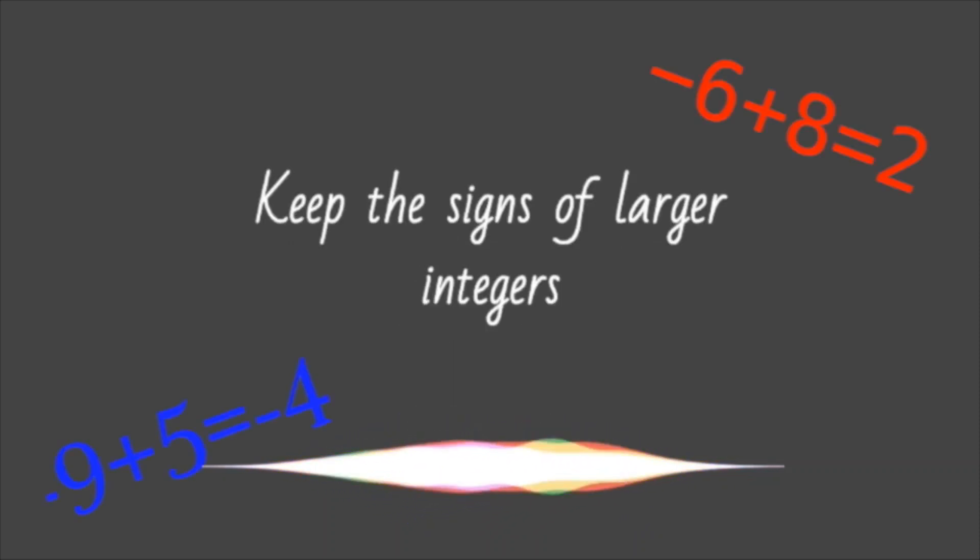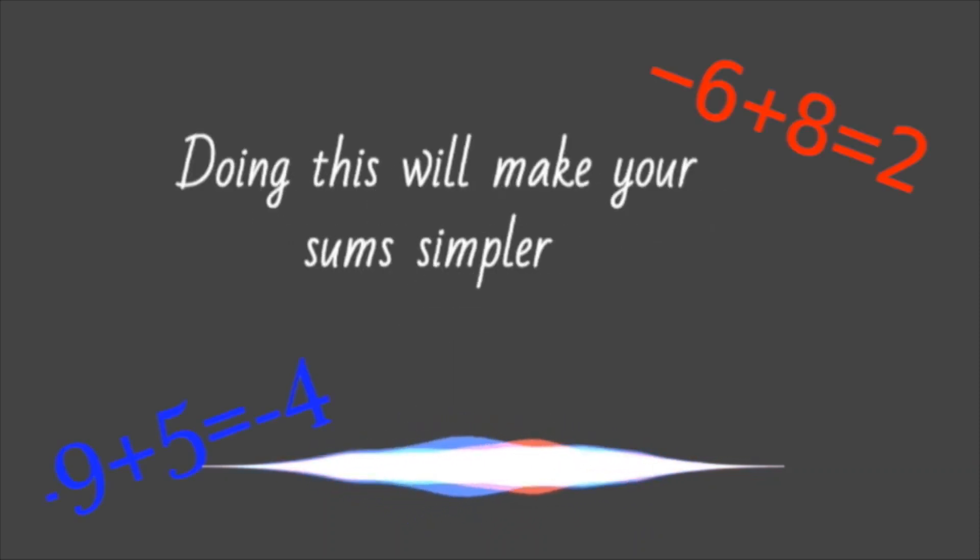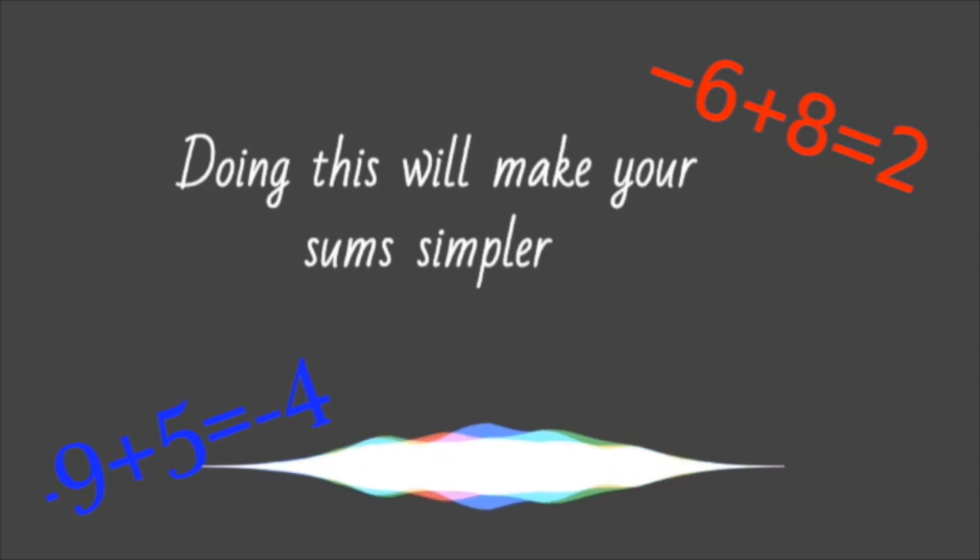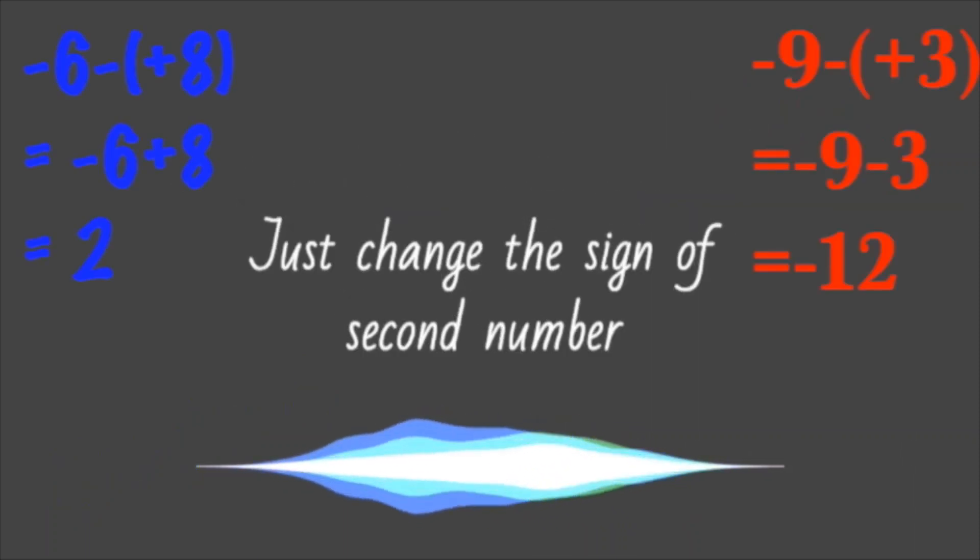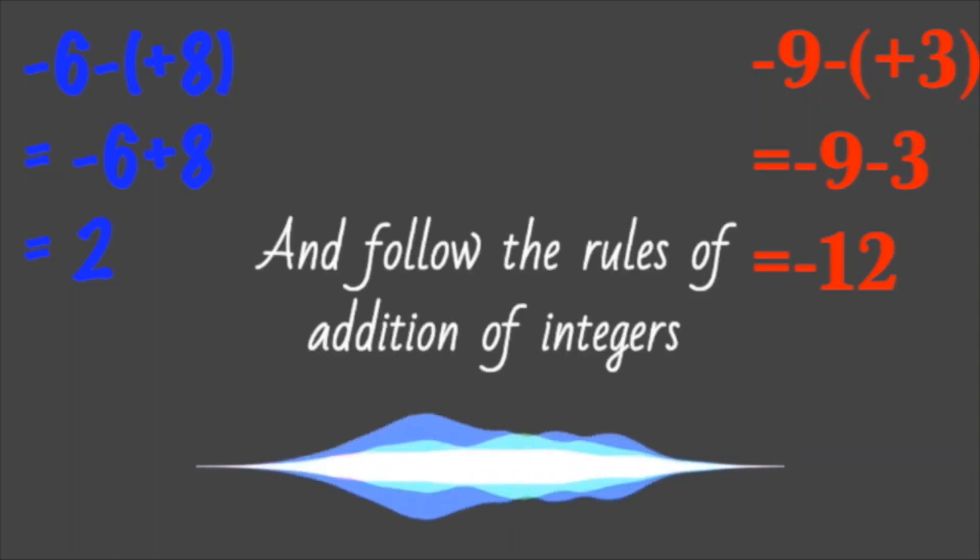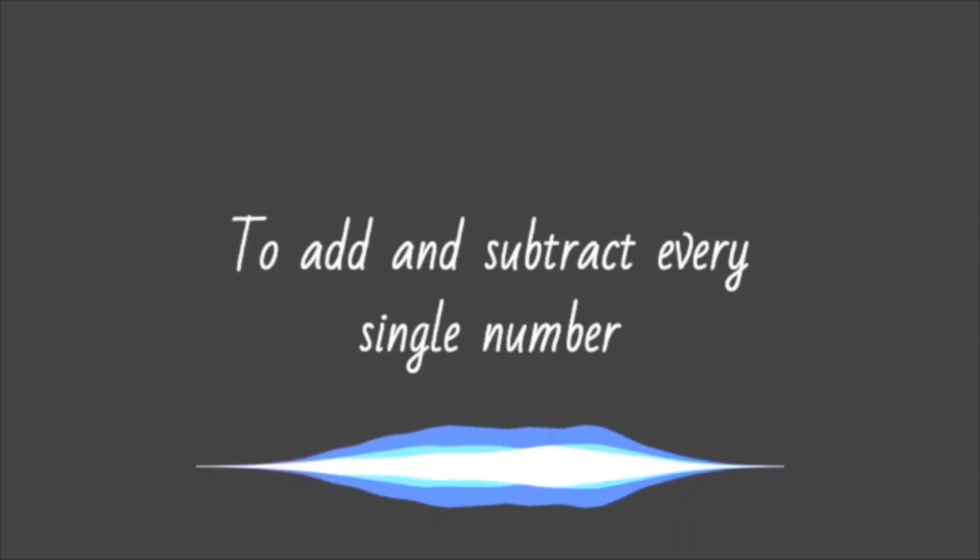Keep the sign of larger integers. Doing this will make your sums much simpler. While subtracting integers never slumber. Just change the sign of the second number. And follow the rules of addition of integers to add and subtract every single number.